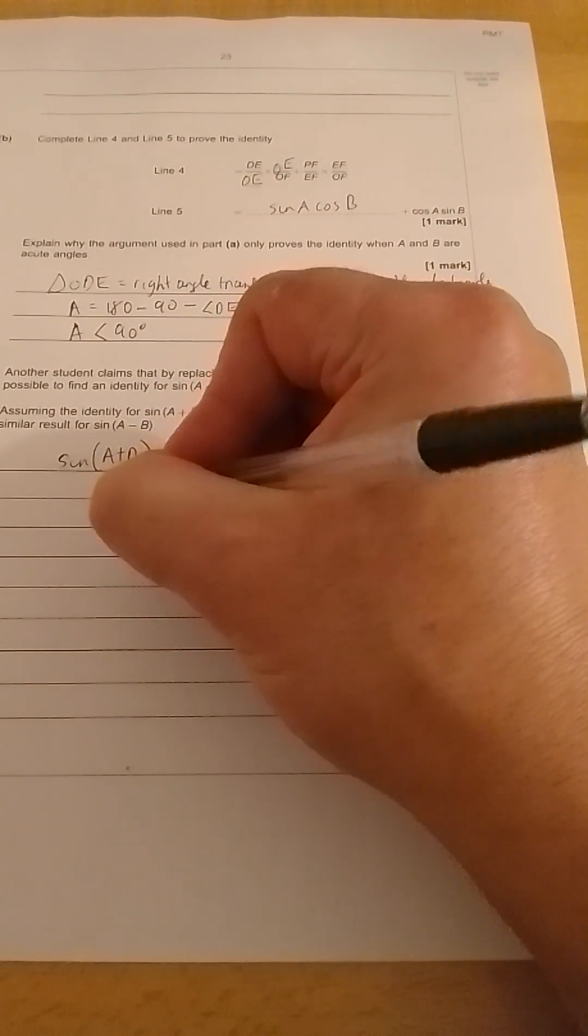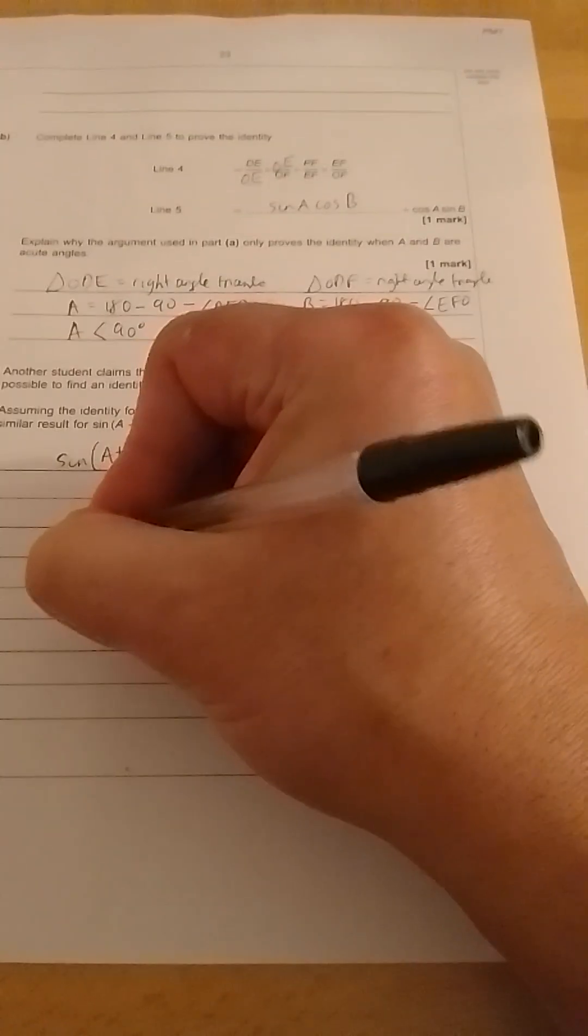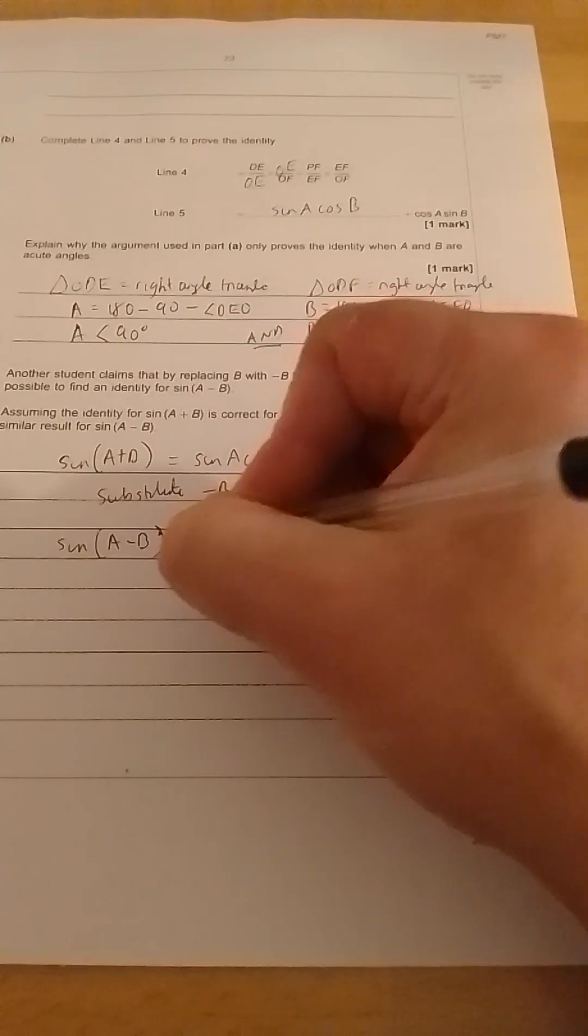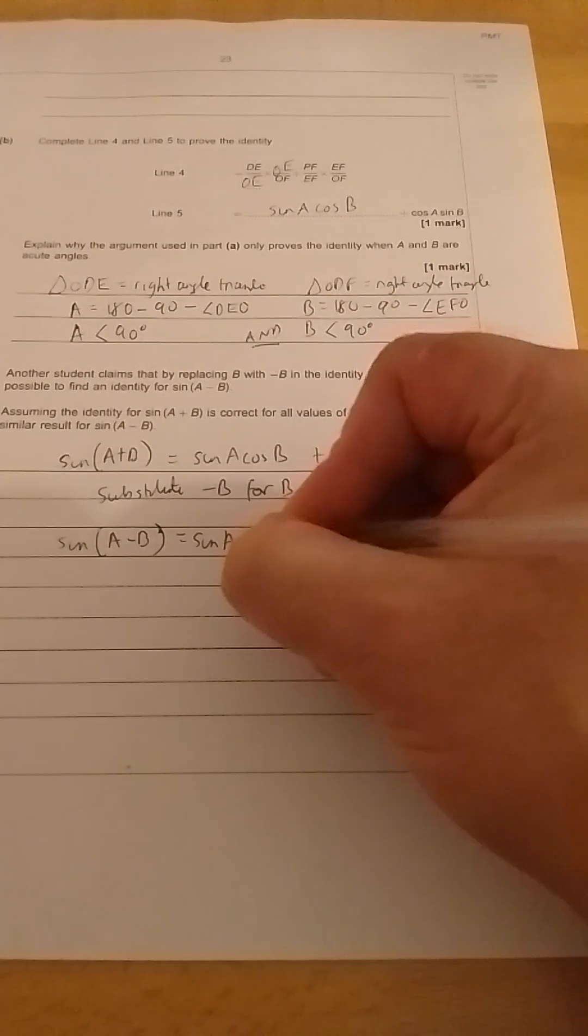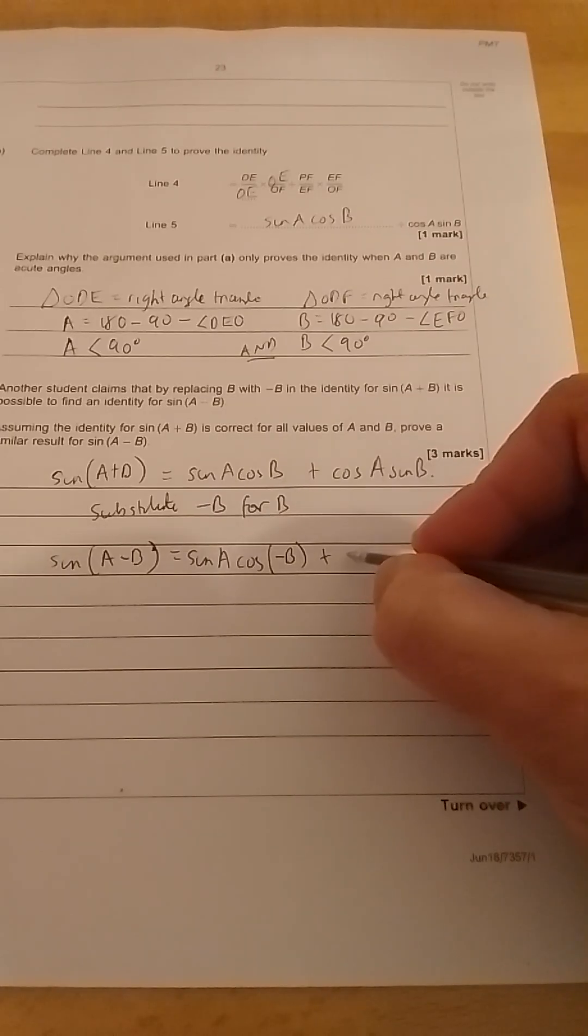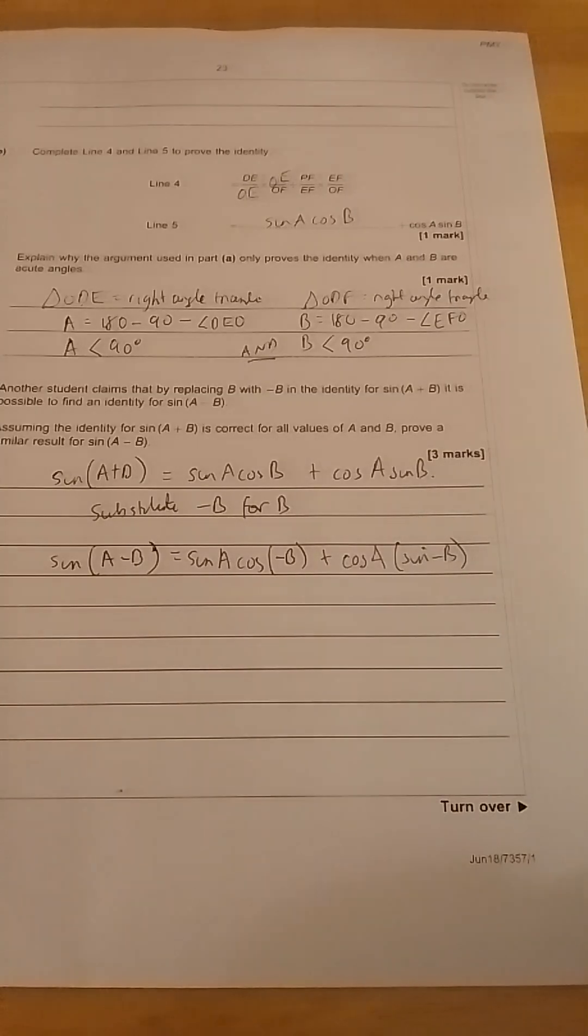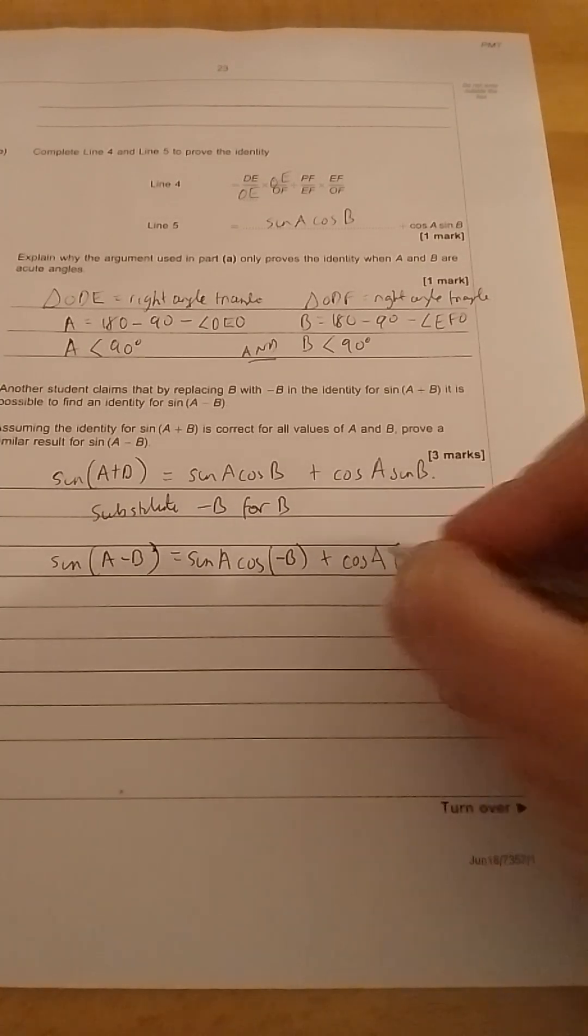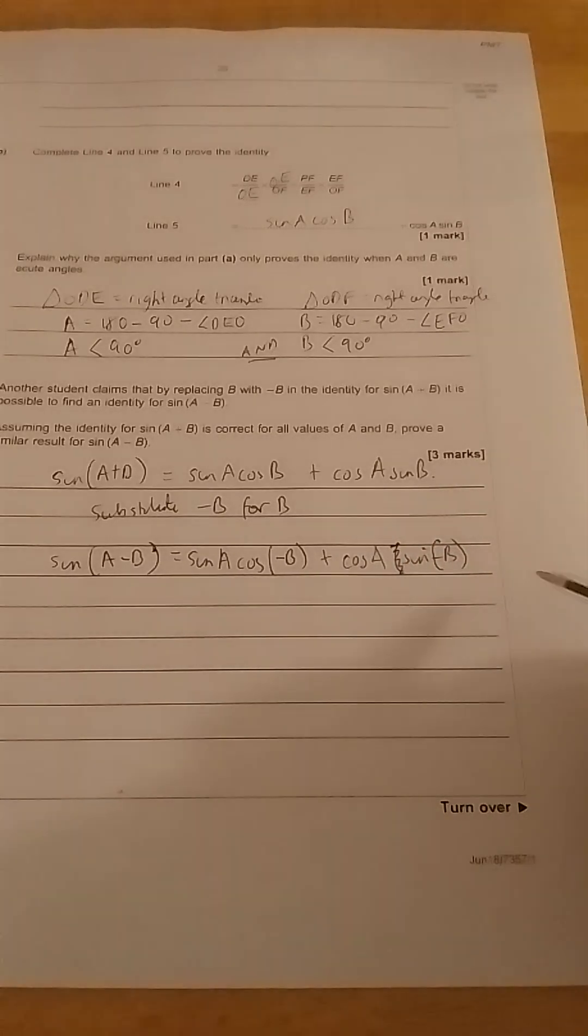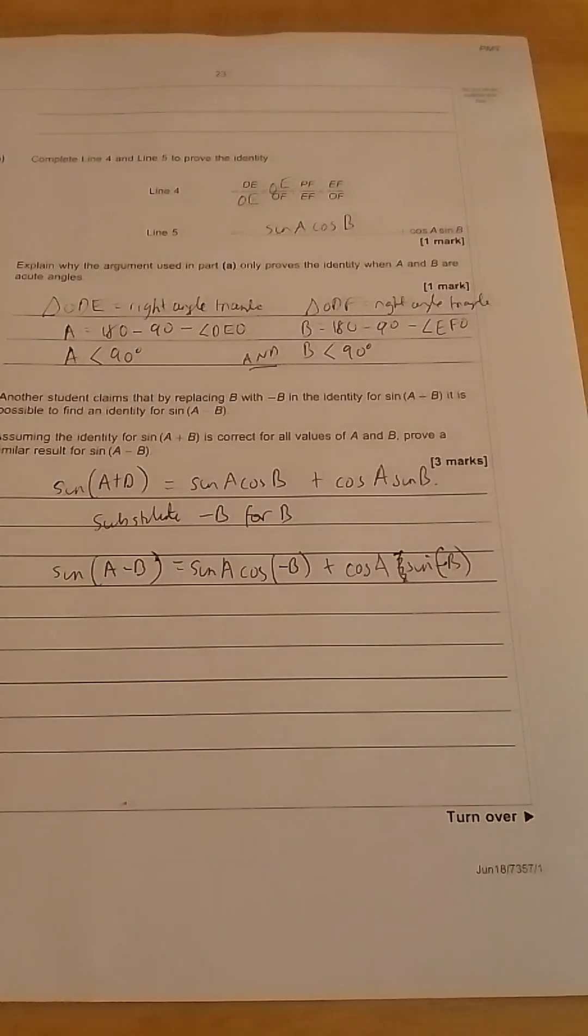Substitute minus B for B. And we will now get sin(A - B) is equal to sin A times cos(-B) plus cos A times sin(-B). So what we need to do is somehow get this minus out of the sine and cos functions.